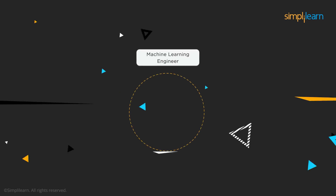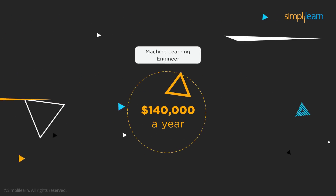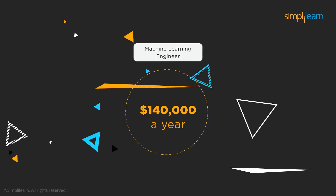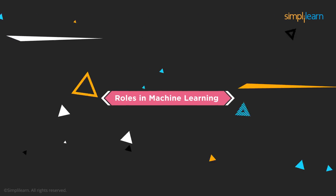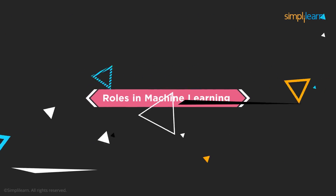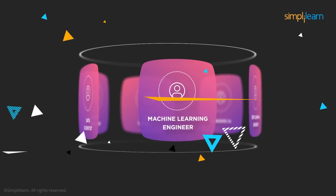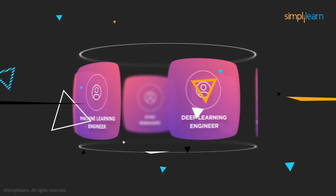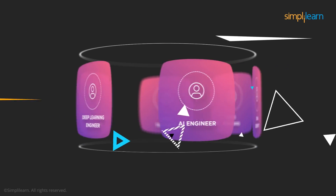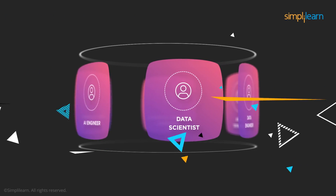An average machine learning engineer earns about US$140,000 a year — isn't that alone motivating enough? Here are the most buzzing job roles you will be eligible for once you learn the fundamentals of machine learning: Machine Learning Engineer, Deep Learning Engineer, AI Engineer, and Data Scientist.